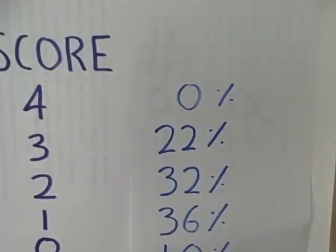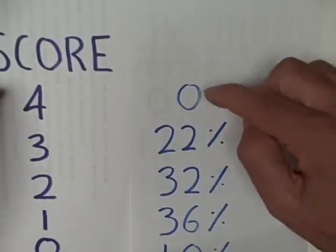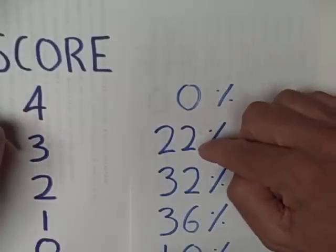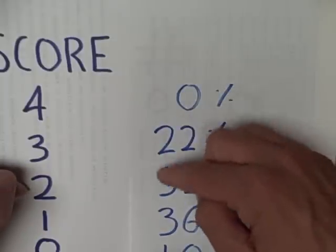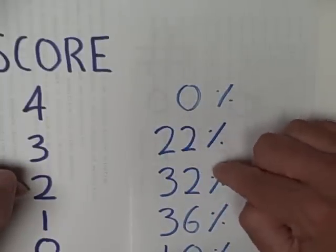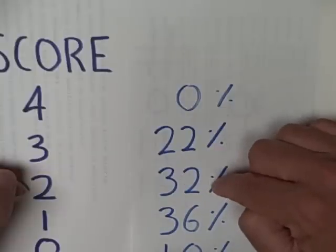And ask ourselves the question, where does the cumulative percentage cross the 50% or middle range? And it doesn't matter whether you go from top to bottom or bottom to top. If you start from the top and go down to a score of 3, that's only 22% of our sample. But if you add in the 32% that scored a 2, notice we have crossed into the 54% cumulative total. That crosses the halfway mark. 2 must be the median.